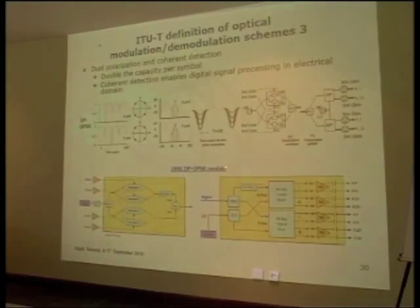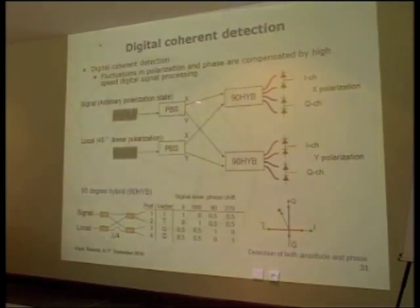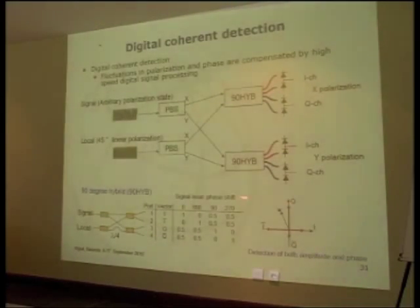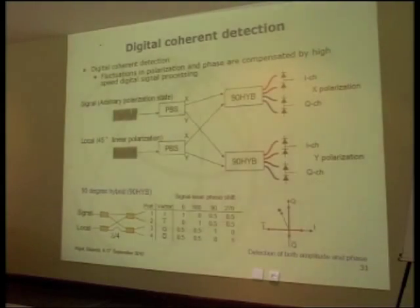DP-QPSK with digital coherent detection is used in actual 100G transmission systems. The configuration requires the signal and two local lasers, split into two polarization states, mixed in a 90-degree hybrid, and detected on I-channel and Q-channel. The configuration is very complex, involving a 90-degree hybrid for coherent detection.